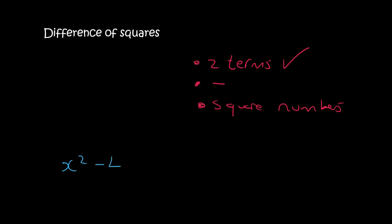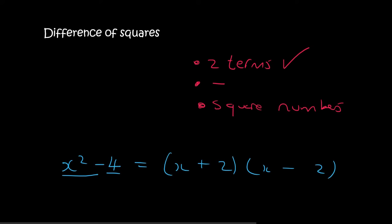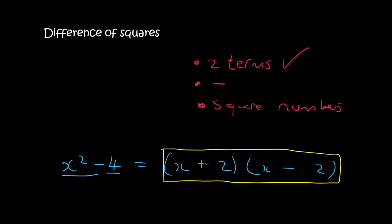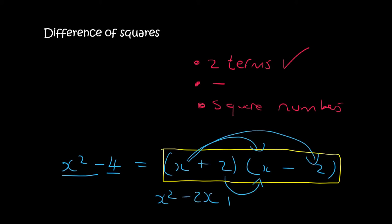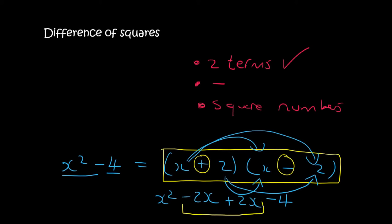Let me quickly show you how this actually works. Here we've got two terms separated with a minus, so it becomes (x plus 2)(x minus 2). But how does this work? If you multiply it out, you get x squared, then minus 2x, then plus 2x, then minus 4. Because we have a plus 2x and a minus 2x, those middle terms cancel, and you're left with x squared minus 4 — so it does work.